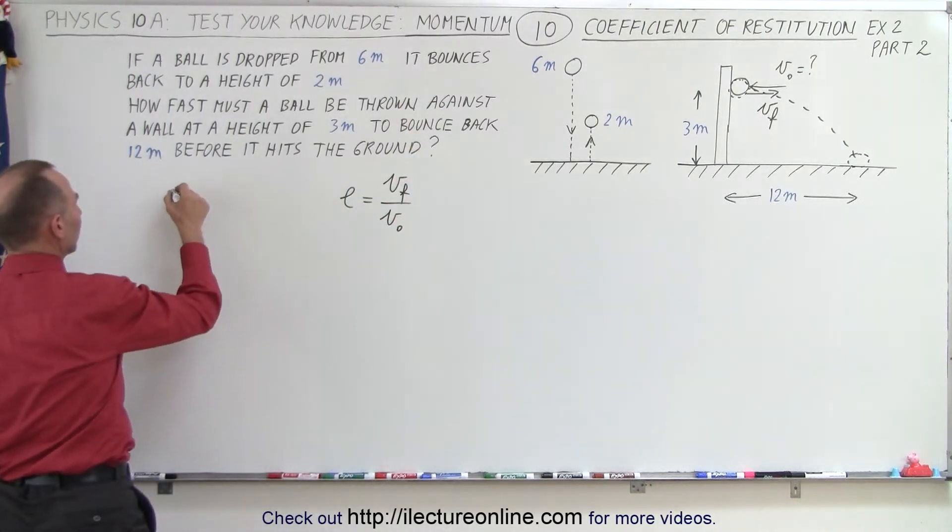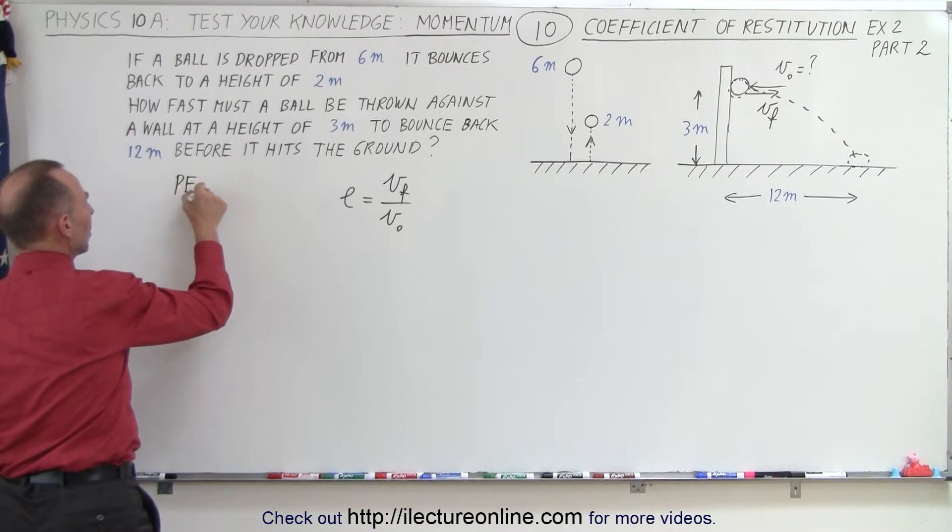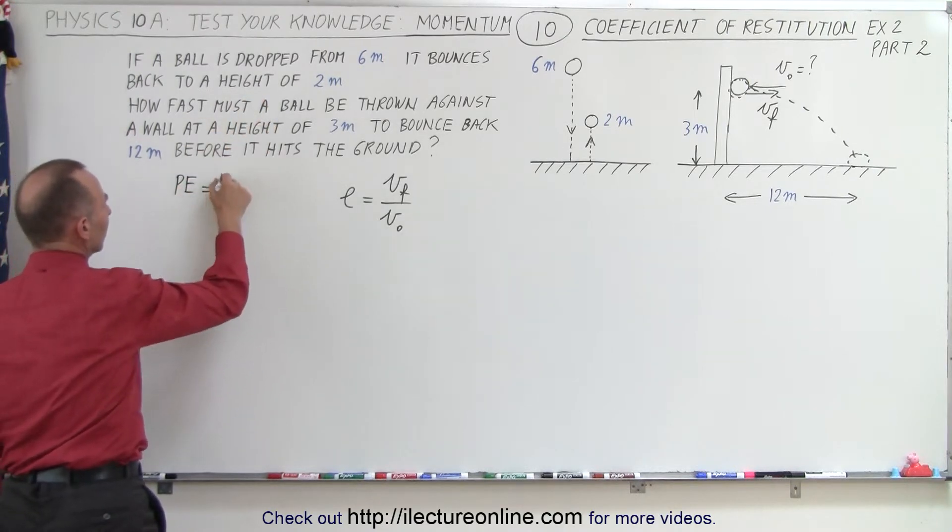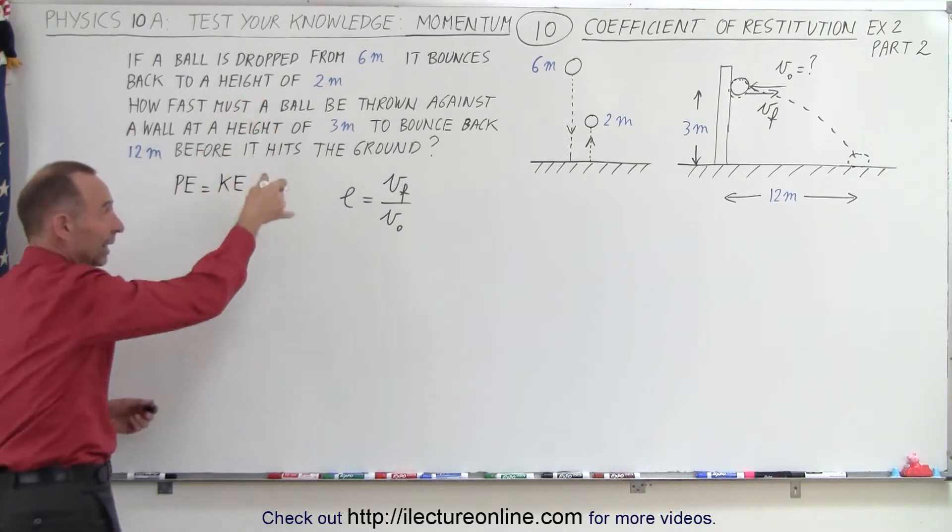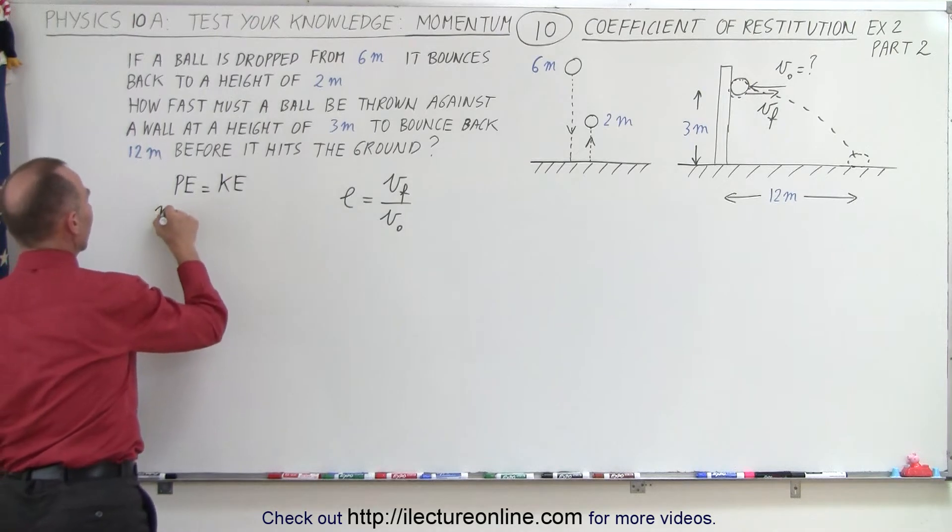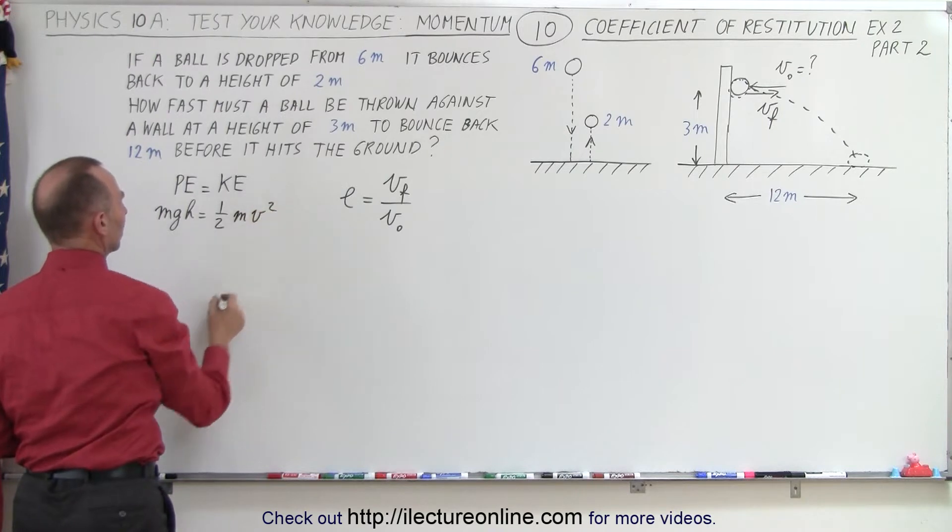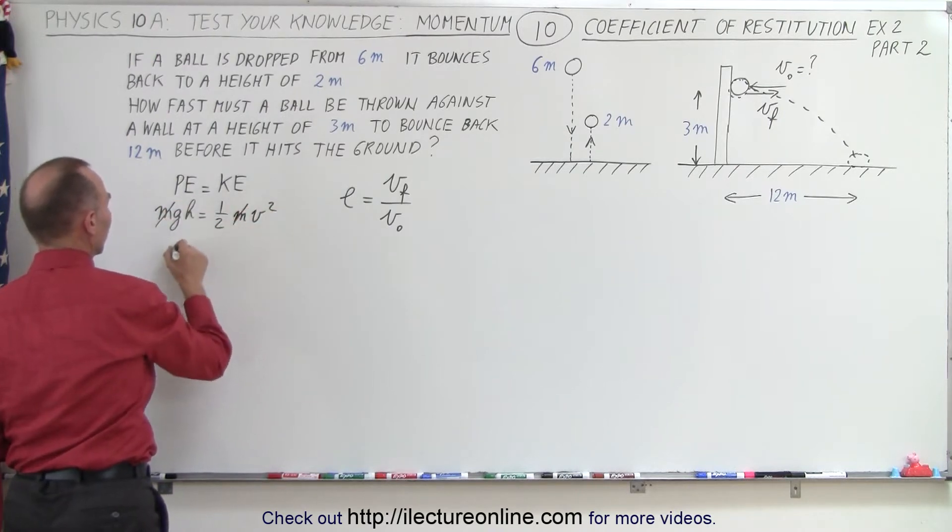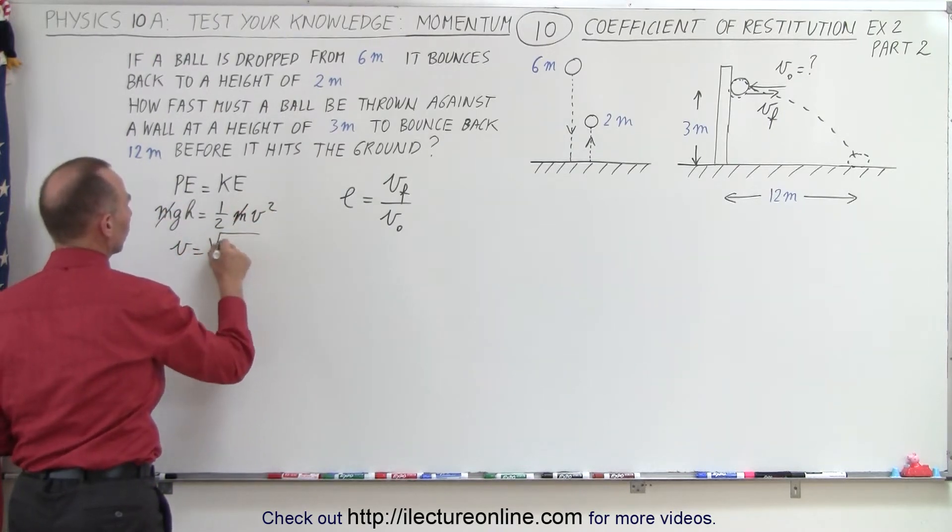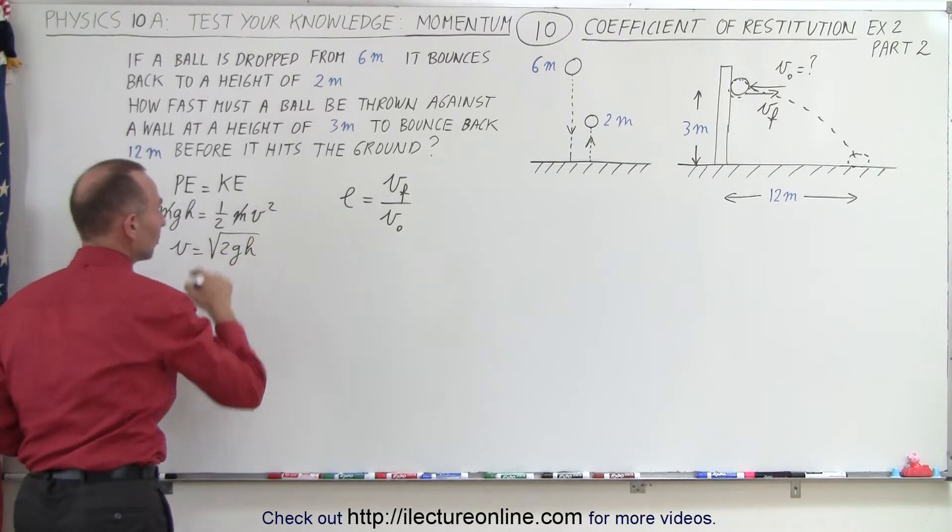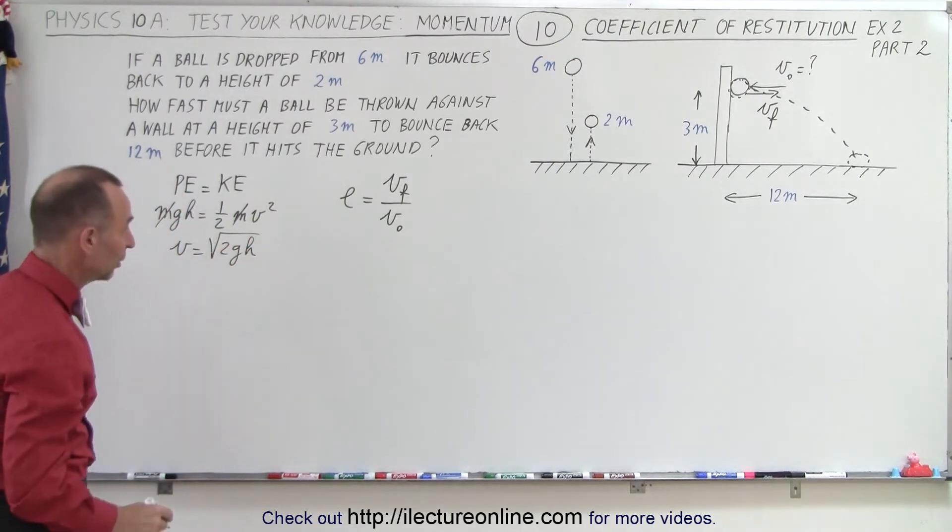And using the comparison that the potential energy, when it's at its maximum height, equals the kinetic energy right before it hits the ground, we can say that mgh must equal 1 half mv squared. And when we cancel out the m's and solve for v, we get the square root of 2gh, which by now should be very familiar to you.